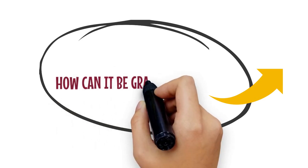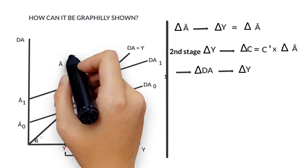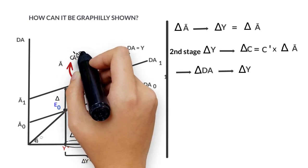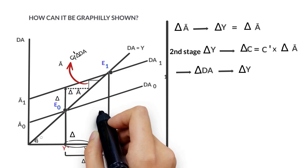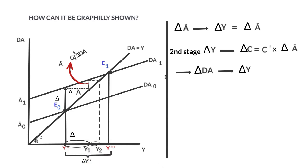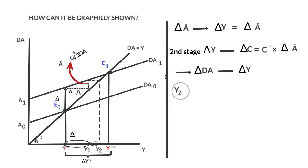This increase in consumption leads to an increase in aggregated demand, which leads to a further increase in income. The initial increase in aggregated demand produces an increase in consumption, and therefore in aggregated demand, equal to the marginal propensity to consume times the increase in aggregated demand. If we project that increase again on the bisecting line, an increase in income is obtained, getting to point Y sub-2. Therefore, in the second phase, we get to income level Y sub-2.